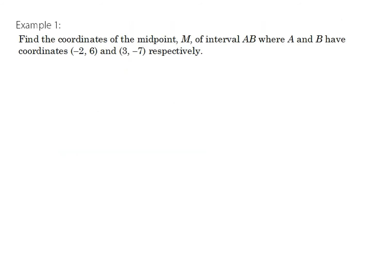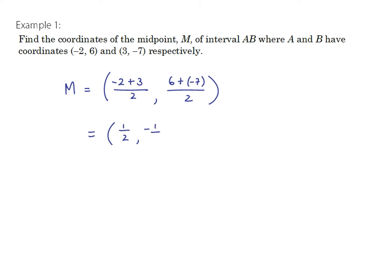Let's look at an example. Find the coordinates of the midpoint M of the interval AB, where A and B have coordinates (-2, 6) and (3, -7) respectively. We know we need to average the x-coordinates of A and B to find the x-coordinate of M: that's (-2 + 3) / 2. And the y-coordinate of M will be the average of the y-coordinates: (6 + (-7)) / 2. So we have the point (1/2, -1/2).